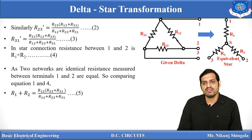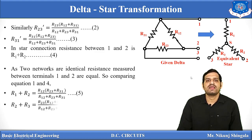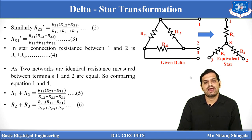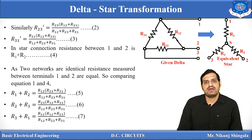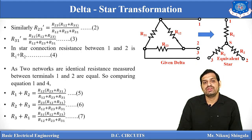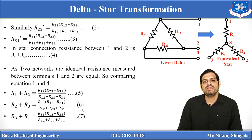Similarly, R2 + R3 = R23·(R12+R31)/(R12+R23+R31), and R3 + R1 = R31·(R12+R23)/(R12+R23+R31). These are equations 5, 6, and 7.